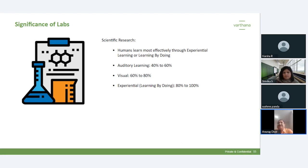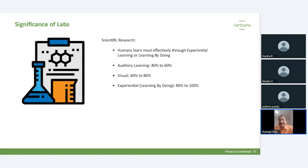Scientific research says that human beings learn 40 to 60 percent through the auditory method — through listening. They learn through the visual mode — videos, movies, etc. — approximately 60 to 80 percent. However, the most effective method of learning as per research is learning by doing, or experiential learning, kinesthetic learning, Montessori method — whatever name you call it — which is about 80 to 100 percent.